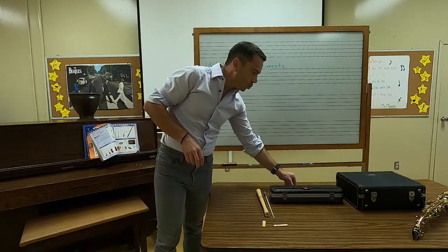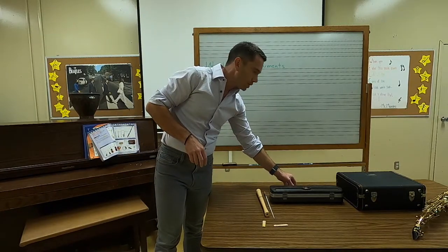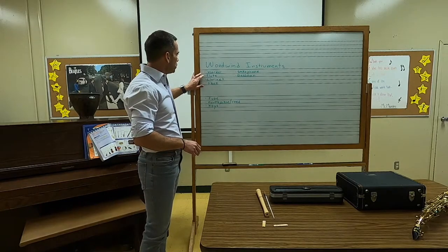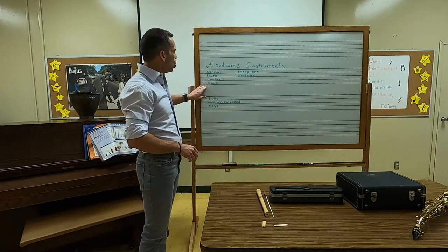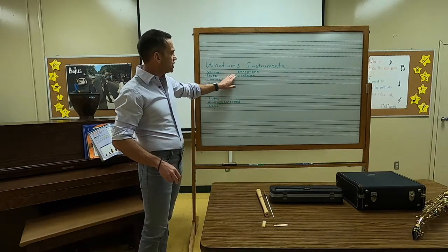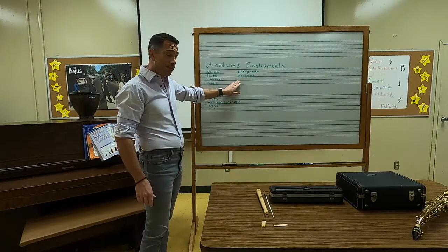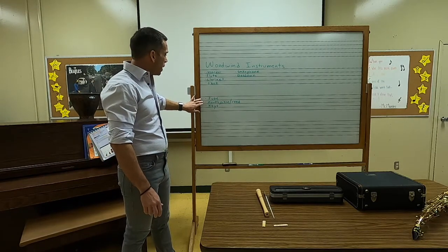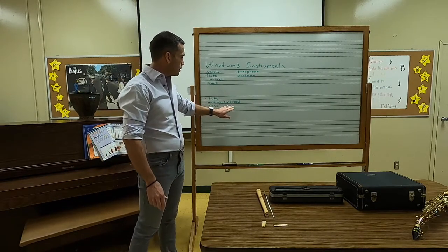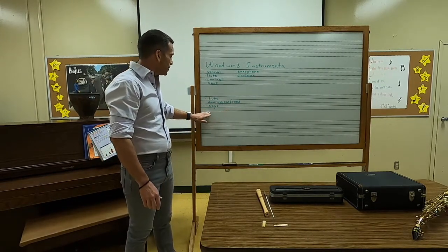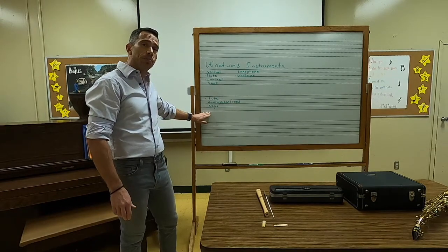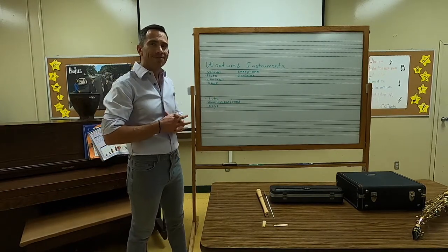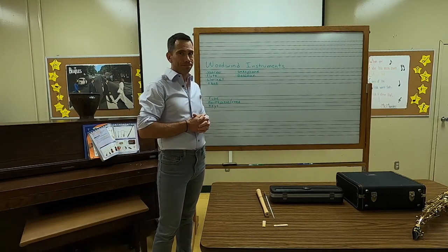So there's the woodwind family for you today. We learned about the recorder, flute, clarinet, oboe, saxophone, and bassoon. We learned how woodwinds have a tube, a mouthpiece, and a reed, and they have keys to change the pitch. I hope you enjoyed that, and we'll see you next time.